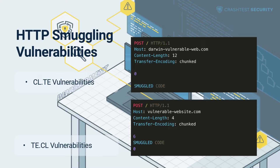In a CL.TE attack, the frontend server uses the Content-Length header while the backend relies on the Transfer-Encoding header. It is possible to craft a malicious request as per the code shown in the video. The frontend server processes the Content-Length header and acknowledges that the message body is 12 bytes long, up to the boundary of the smuggled code. When the backend server receives this request, it processes based on the Transfer-Encoding header, which instructs it to interpret the message with chunked encoding. The first chunk is stated to be zero length, so the server terminates the request, leaving the smuggled code unprocessed — the backend server then treats this as the start of the following HTTP request in the sequence.